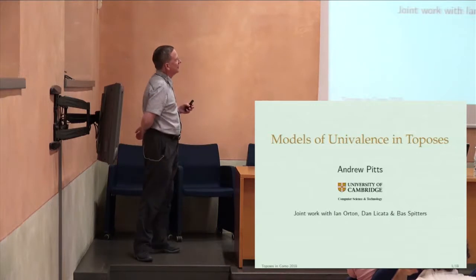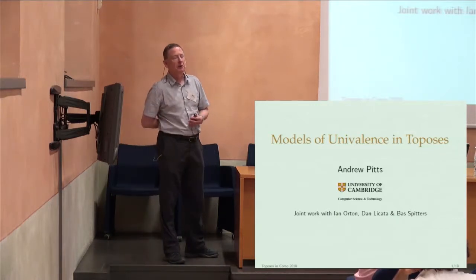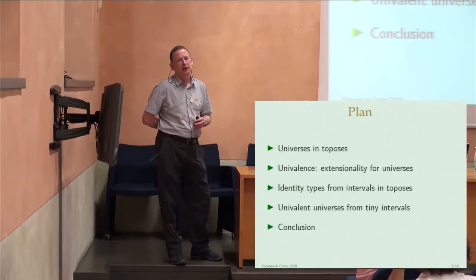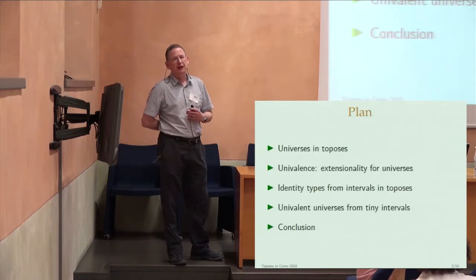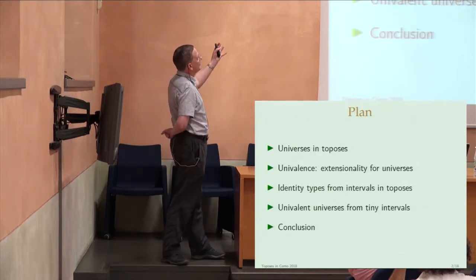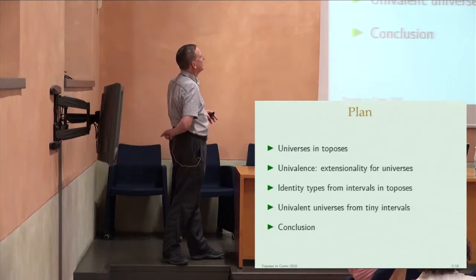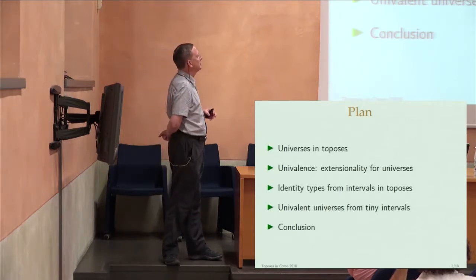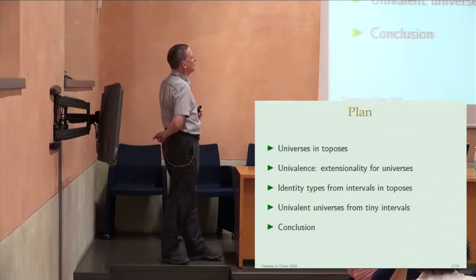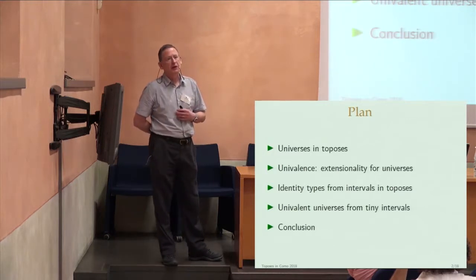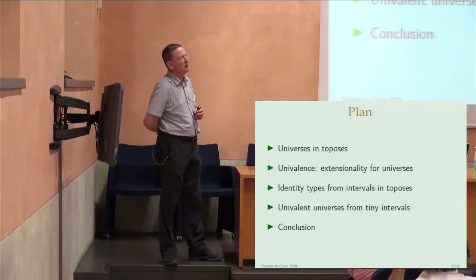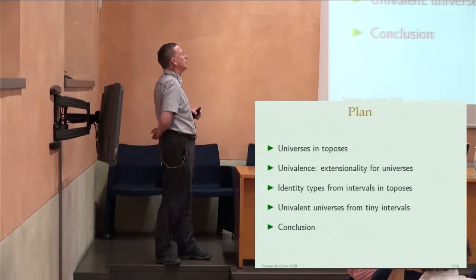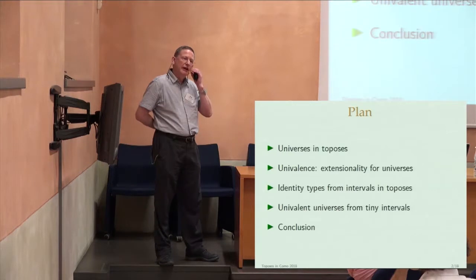So I'm going to be talking about models of univalence in toposes. We're going to be talking about universes — universes of types. I'll begin by recalling the idea of a universe object in a topos and its relationship to the one in type theory. And then I want to discuss the so-called axiom of univalence that the late Vladimir Voevodsky put forward — an extensionality principle for universes. To do that, we have to discuss the nature of equality in type theory, and in particular identity types. I'll be constructing suitable instances of identity types from an interval object in a topos.